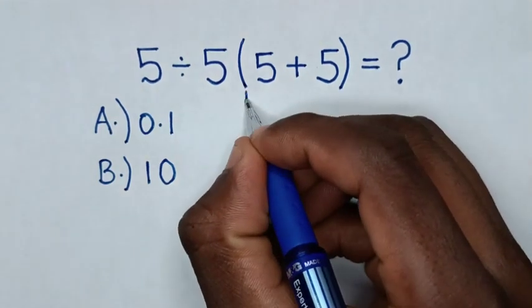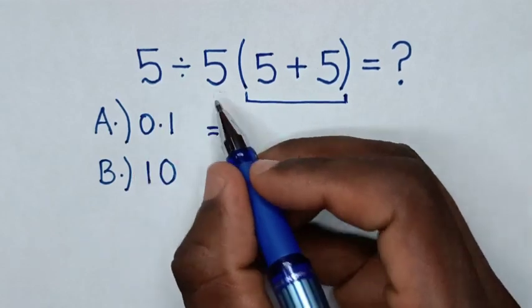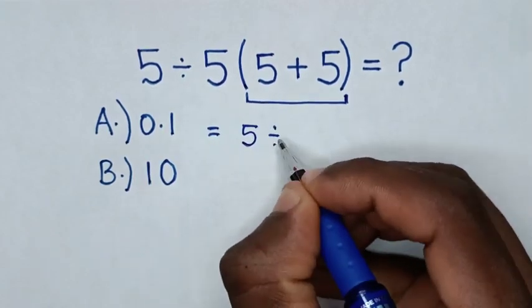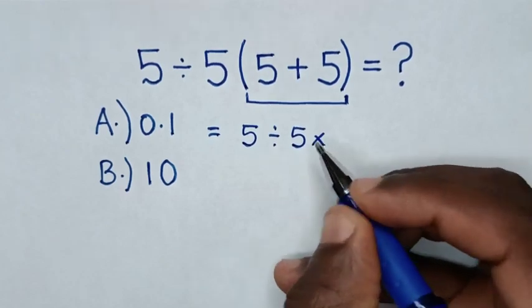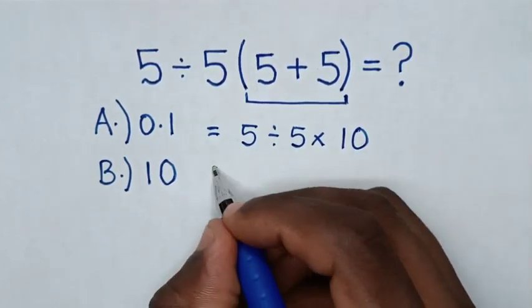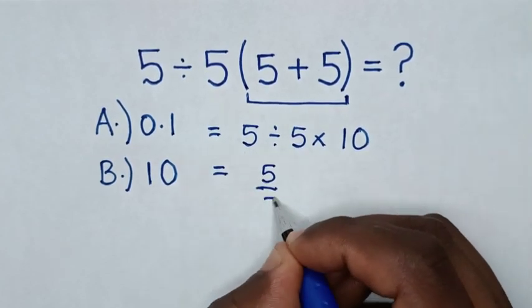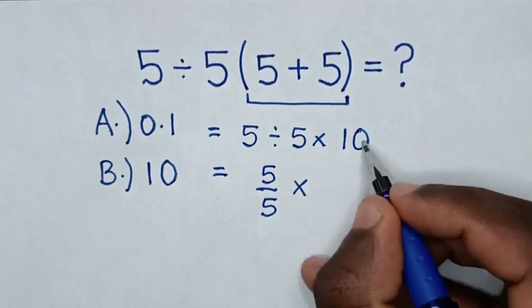So first we start to deal with this operation inside the bracket. Then it will be equal to 5 divided by 5, then times 5 plus 5 is 10. Then it will be equal to 5 divided by 5 is same as 5 over 5, then times this 10.